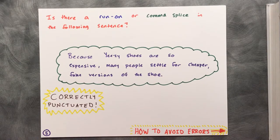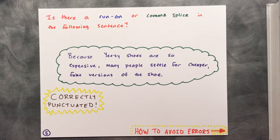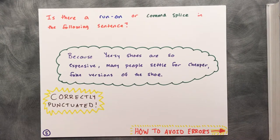It is dependent on the second part of the sentence to complete the meaning. Some common dependent words, like subordinate conjunctions, are: because, after, although, if, until, since, and while.